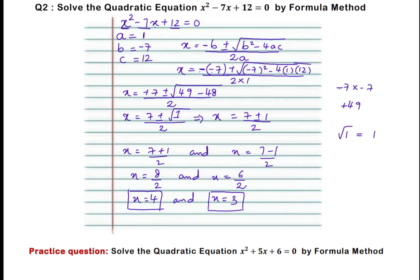Write down the given quadratic equation and find out the coefficients A, B, and C. Write down the quadratic formula: x equals minus B plus or minus square root of B squared minus 4AC, whole divided by 2A. Then substitute the values of A, B, C and simplify to get the roots. You also have a practice question: solve the quadratic equation x squared plus 5x plus 6 equals 0 by formula.